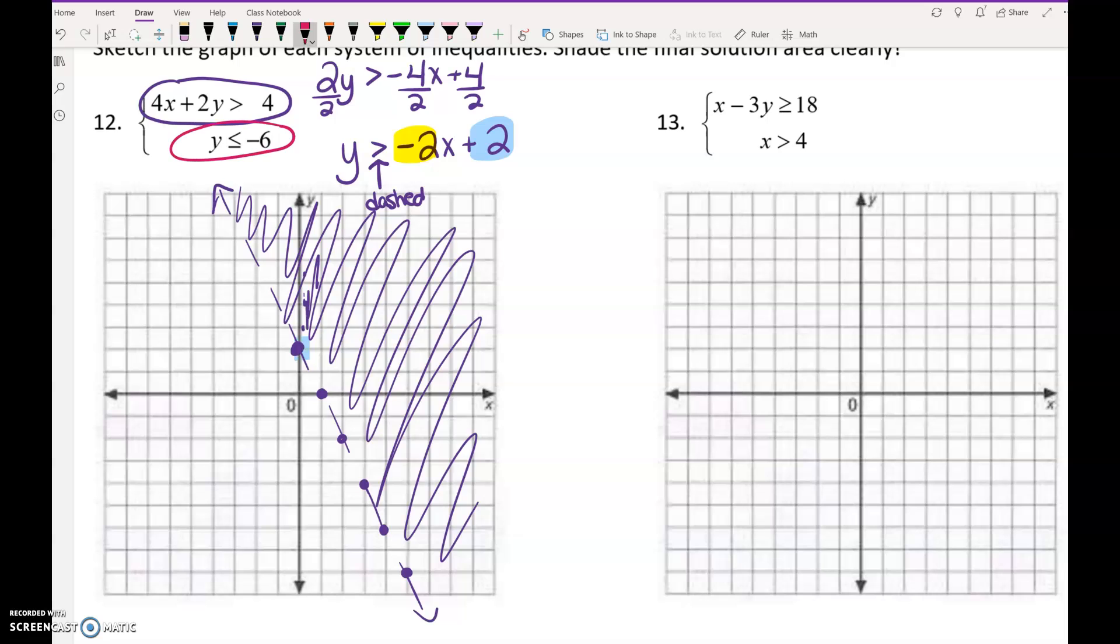Okay, y is less than or equal to negative 6. That is a horizontal line. And on my answer key, I put it at positive 6. Whoops. So this horizontal line needs to be down here at negative 6 on the y-axis. It needs to be a solid line because it's less than or equal to. And we would shade down. So what part of the graph is double shaded? The bottom right. This bottom right teeny little corner is where it's double shaded.